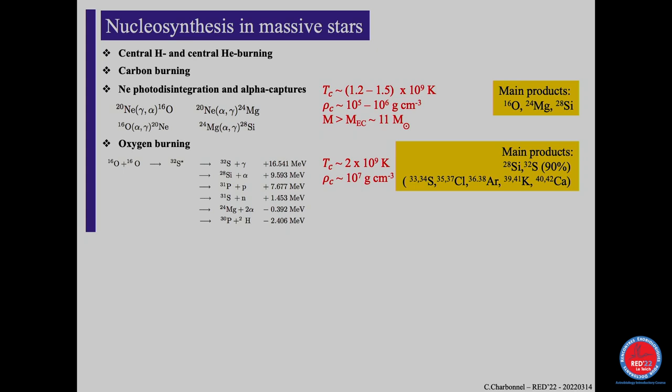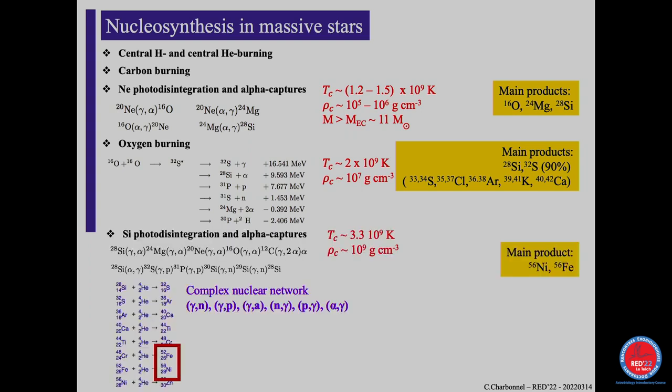Oxygen-16 burning requires about 2 billion K and an order-of-magnitude step in density, producing silicon among other things. After that, at the very center, high-energy photons photo-disintegrate the silicon and magnesium, releasing a lot of alpha particles. Even though you don't have free alpha particles at that point, the photo-disintegration creates them, and they can fuse with other elements at very high temperature, making for a very interesting nucleosynthesis.